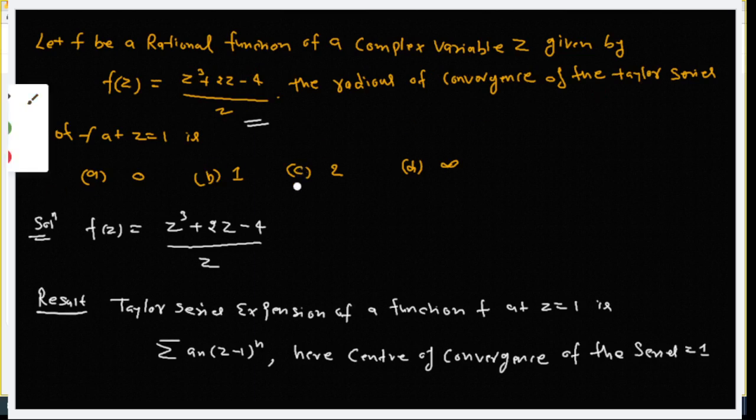We have written a function. If there is any function, the Taylor series expansion of a function at z equal to 1 is given by the summation a_n(z - 1)^n. This is called the center of convergence.